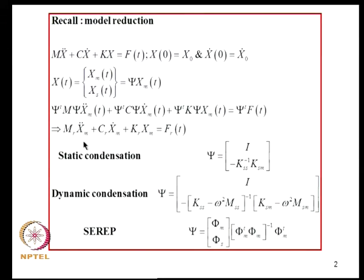There are different model reduction schemes; they differ in their definition of this matrix Psi. In the static condensation technique, the slave degrees of freedom are related to the master degrees of freedom through relations which are strictly valid only under static conditions. We derive the relation between X and XM using static equilibrium equations, and this gives the Psi matrix.